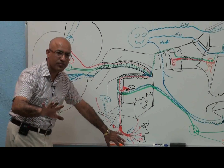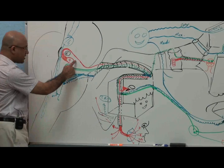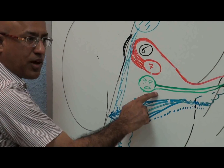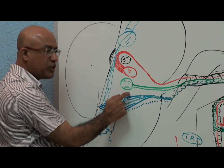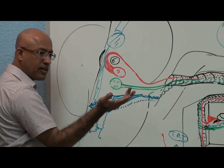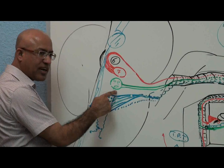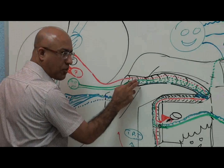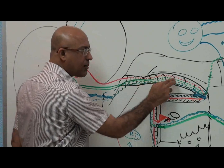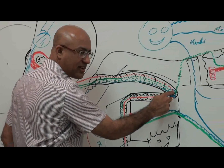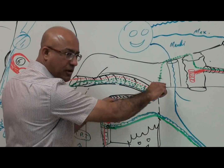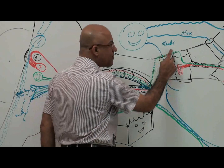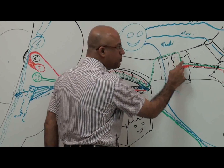From the parotid gland, the facial nerve divides into temporal, zygomatic, buccal, marginal mandibular, and cervical branches for the muscles of facial expression and platysma. Now the parasympathetic fibers: there are two main types — lacrimatory and salivatory. They start from the superior salivatory nucleus and move as part of the nervous intermedius up to the geniculate ganglion, where the lacrimatory and salivatory pathways separate.